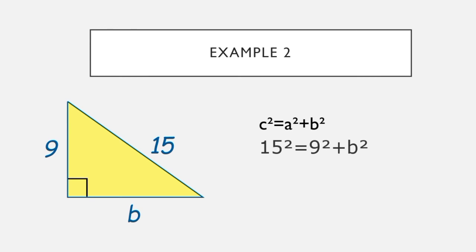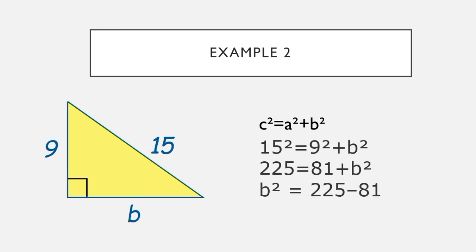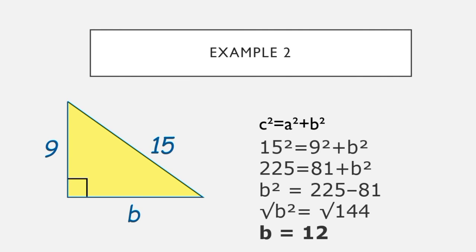Simplifying: 225 is equal to 81 plus B squared. Transposing the positive 81 to the left side, we get B squared is equal to 225 minus 81, so positive 81 becomes negative 81. Subtracting 225 minus 81 gives 144. Taking the square root of 144, since it is a perfect square, the answer is 12. So our missing adjacent value is 12.